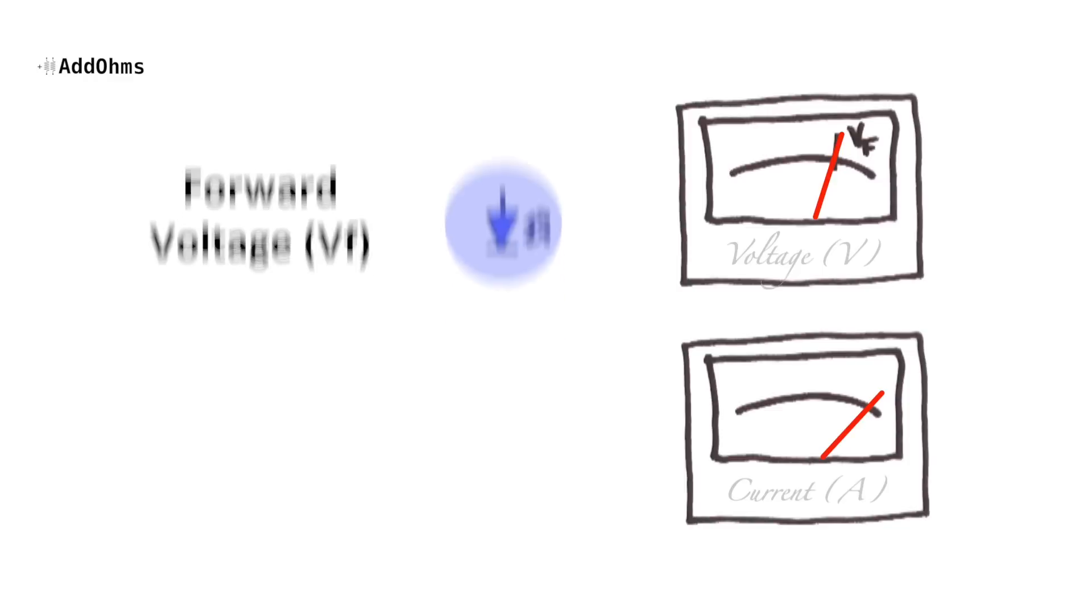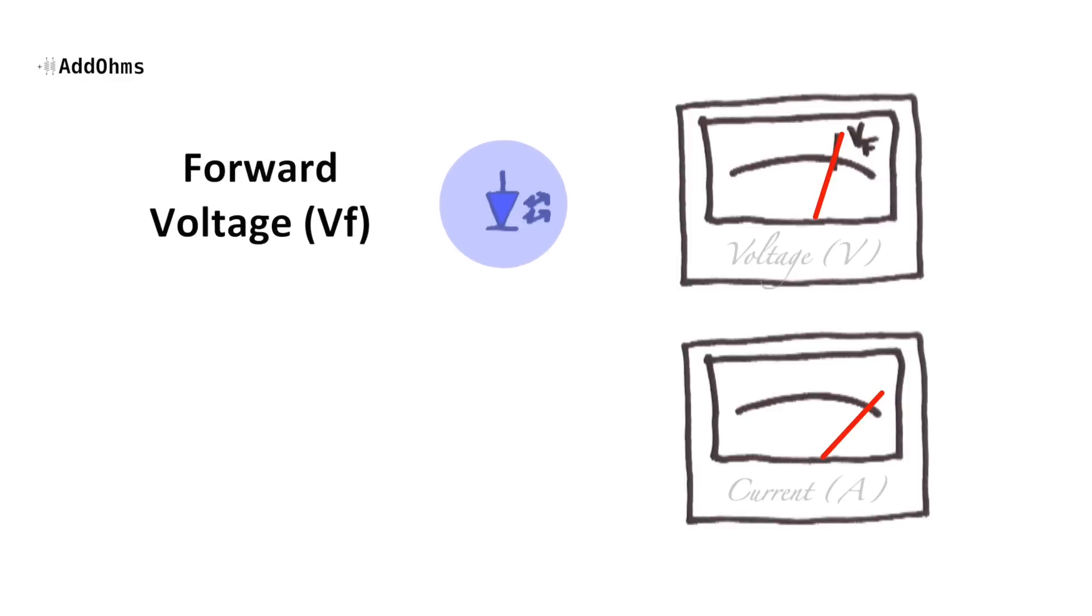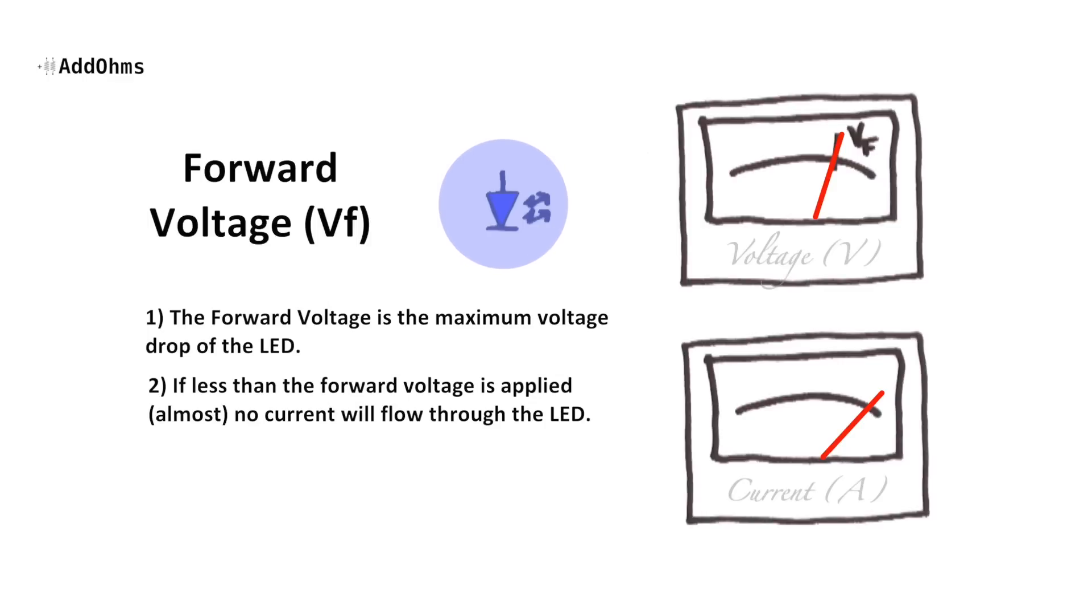Here are three things to know about LEDs and diodes in general. Number one, the forward voltage is the maximum voltage the LED will drop. Number two, if less than the forward voltage is applied, no current will flow through it. Number three, when the forward voltage is applied, the LED effectively becomes a short circuit.